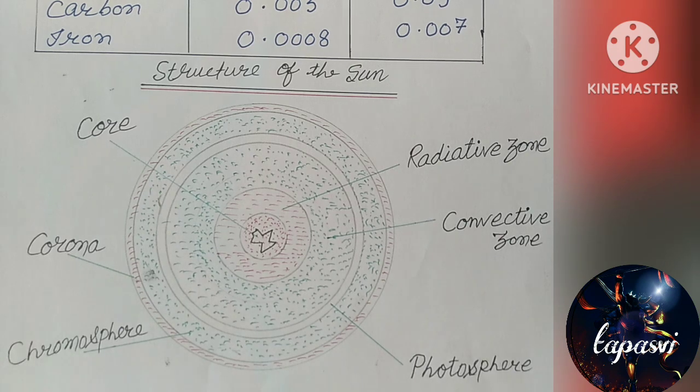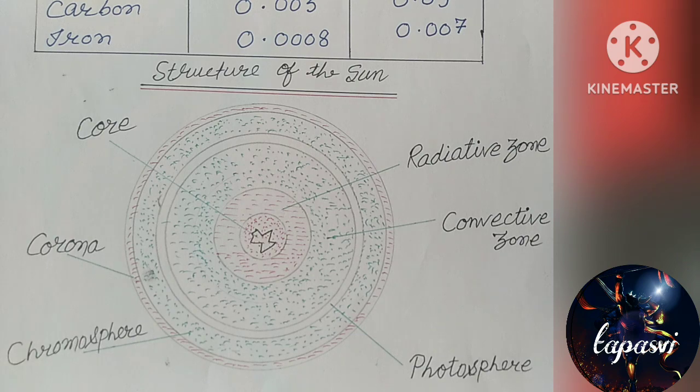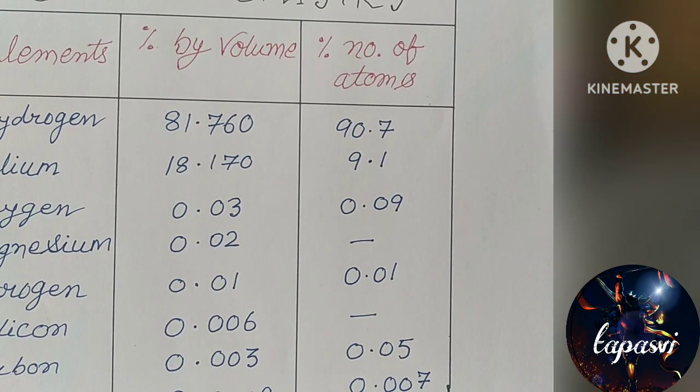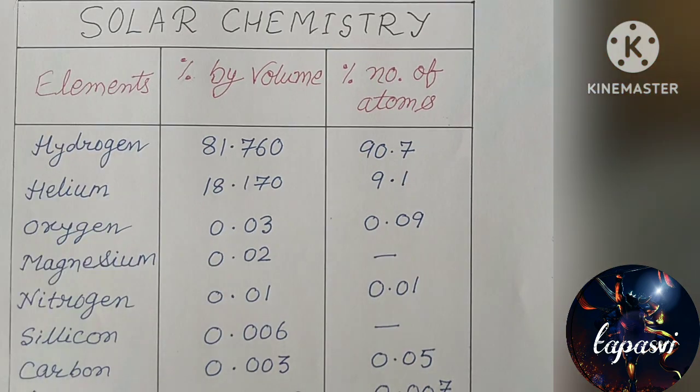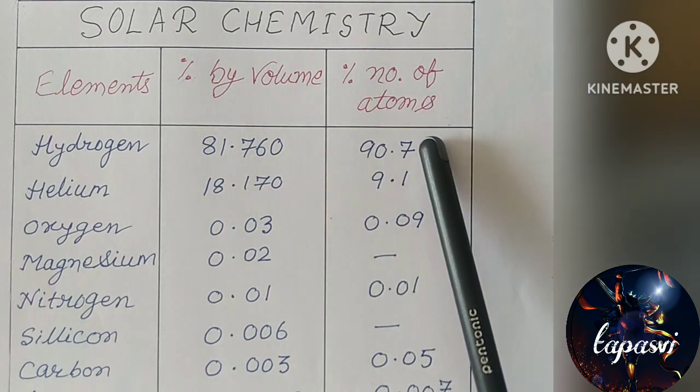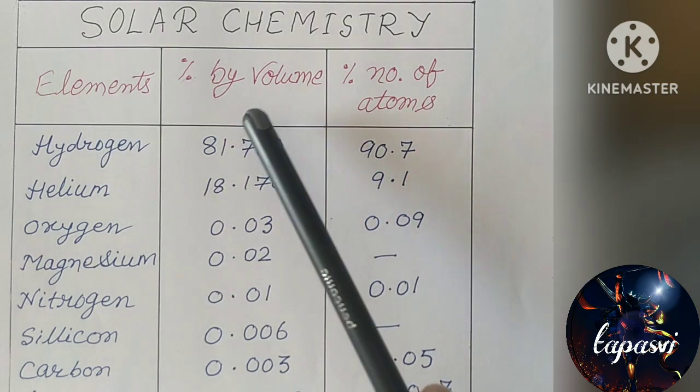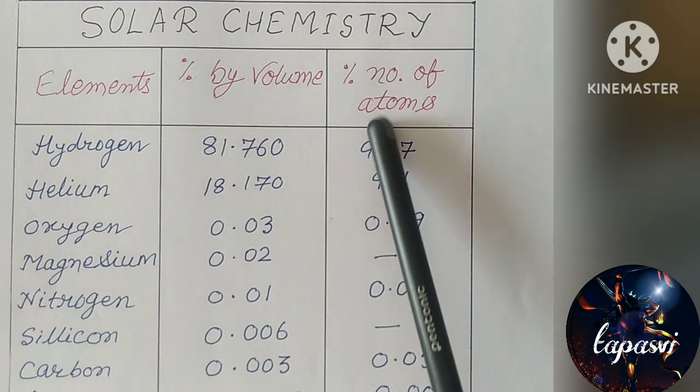The second important discussion should be on solar chemistry. Now we should look at the chart of solar chemistry. The table has three parts: elements, percent by volume, and percent number of atoms.